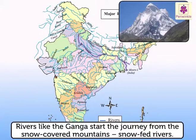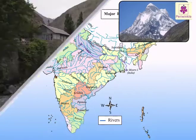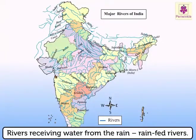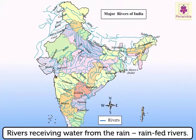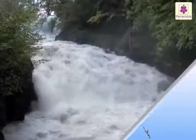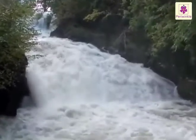Some rivers like the Ganga start their journey from the snow-covered mountains. Such rivers are called snow-fed rivers. They have water flowing in them throughout the year and are known as perennial rivers. The rivers in the south, like the Krishna and Kaveri, and the rivers in the west like the Narmada, receive water from the rains. These rivers are called rain-fed rivers.